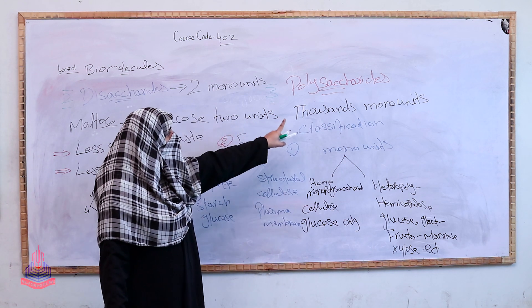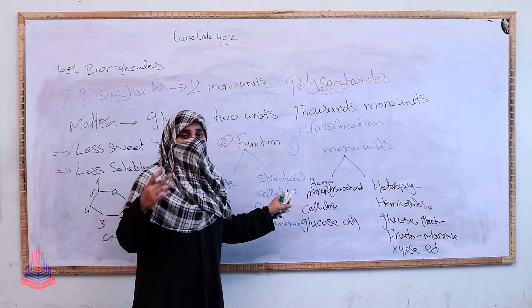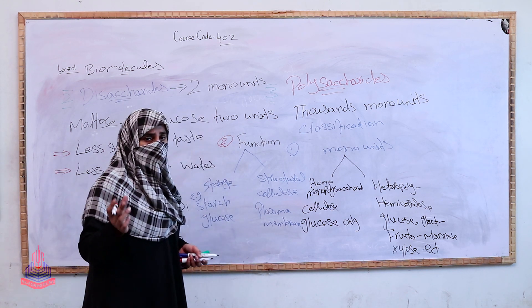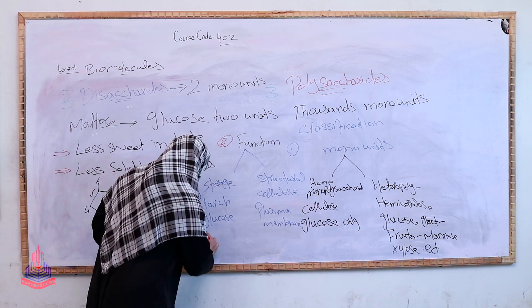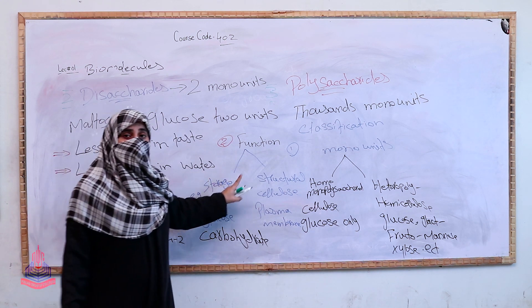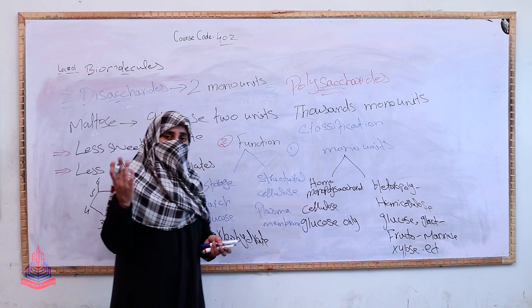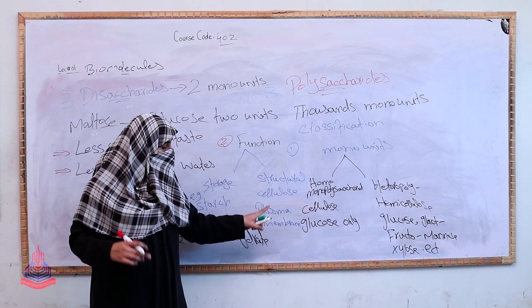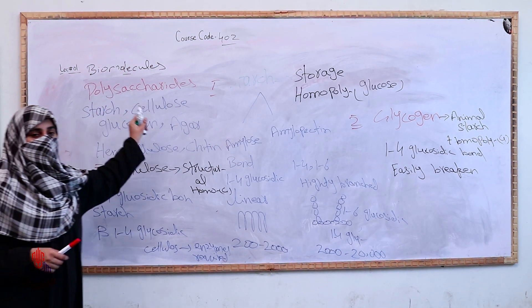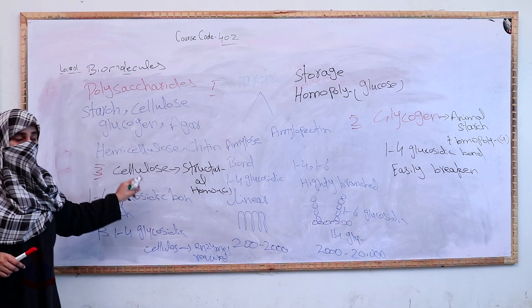Polysaccharides have two main functions. First is storage: starch is a storage polysaccharide found in chili, strawberries, and vegetables — these store carbohydrate molecules as glucose. Second is structural: cellulose is a structural polysaccharide forming the plasma membrane or cell wall. Examples of polysaccharides include starch, glycogen, cellulose, hemicellulose, and agar.